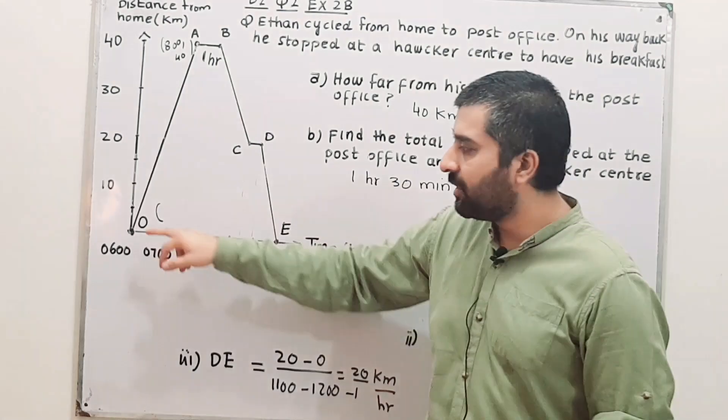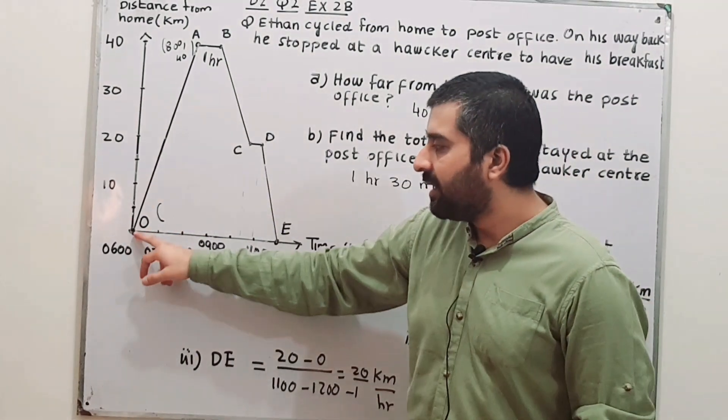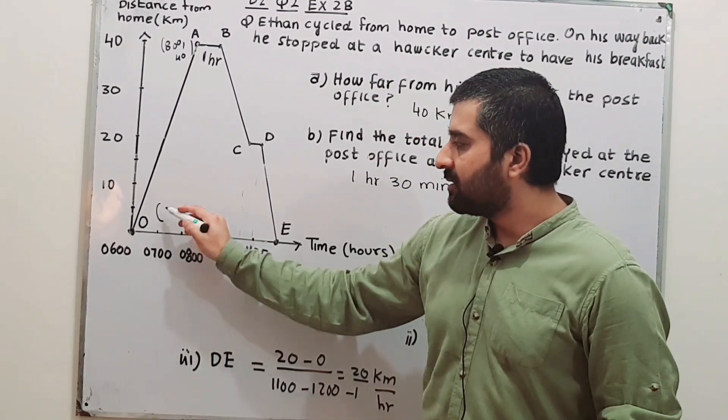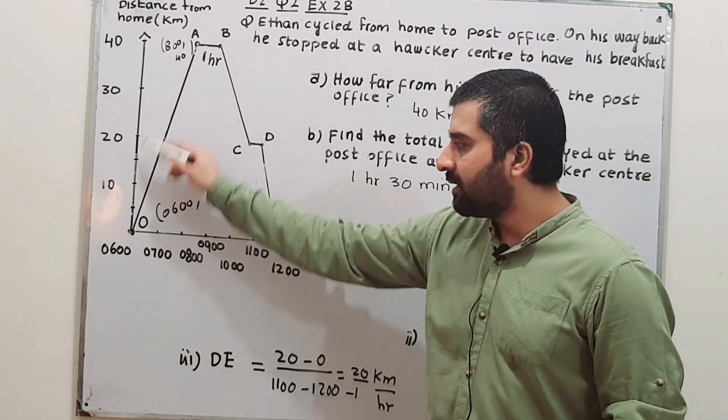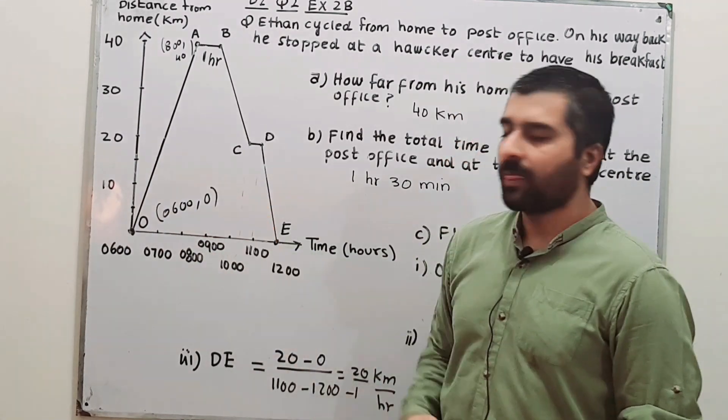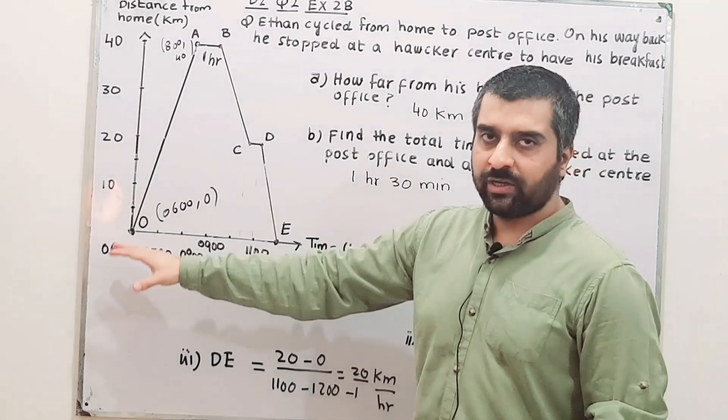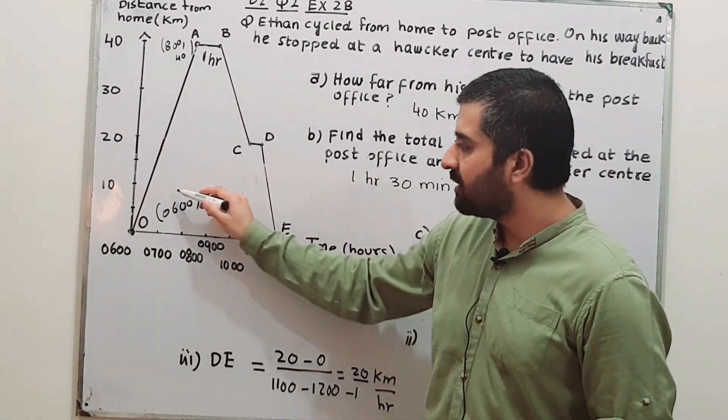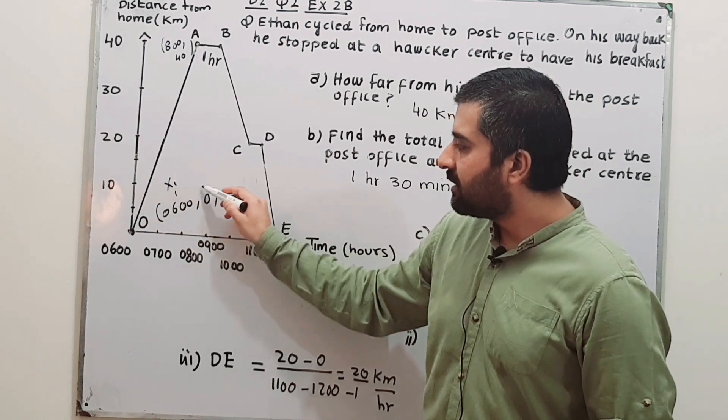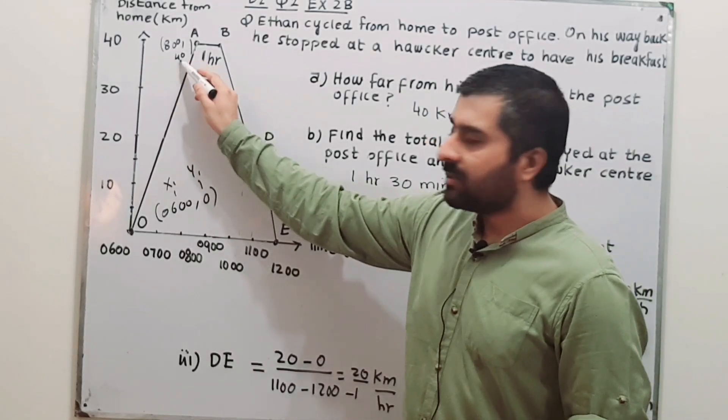Write down the coordinates of point O, where you have the value for x is 0600 hours and value for y, the distance, is 0. Now you name the coordinates of the points O as well as A. If this is x1, then this is y1. So this is x2 and this is y2.